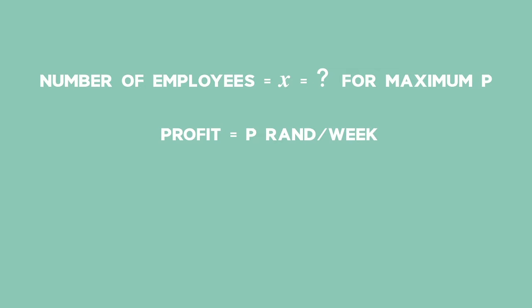The relationship between the profit and number of employees is expressed in the formula P(x) = -2x³ + 600x + 1,000, where x is the number of employees. Calculate the number of employees needed for the factory to make a maximum profit, and hence the maximum profit.